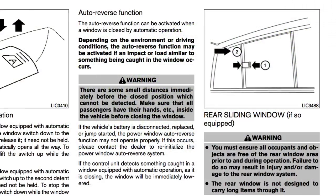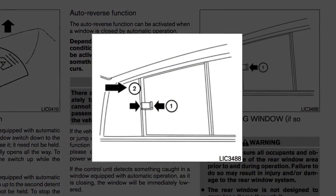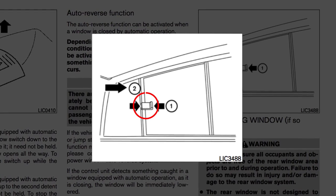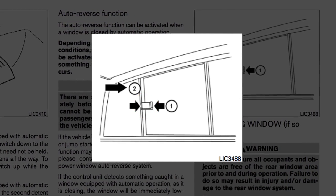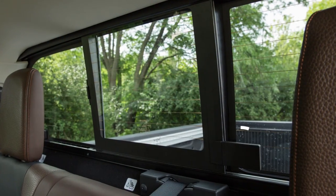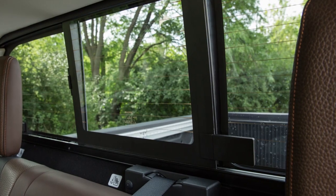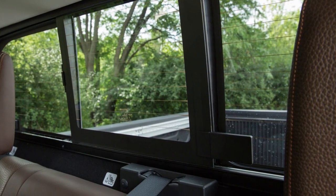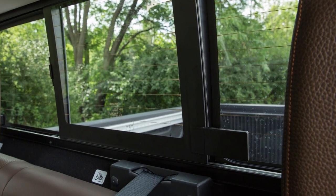To open the manual rear sliding window, if so equipped, squeeze the handles on the lever and slide the window open. If your vehicle is equipped with rear window defrost, you will find a cover over the heating element attachment. Avoid holding on to it when closing the window — it may break.